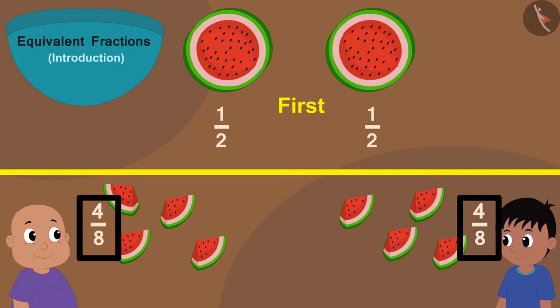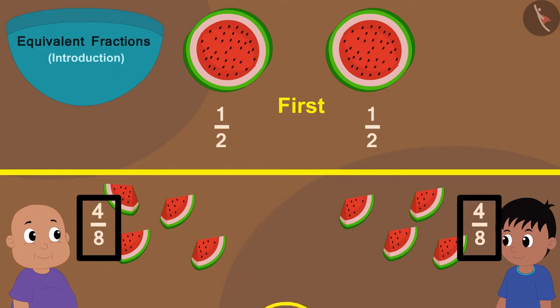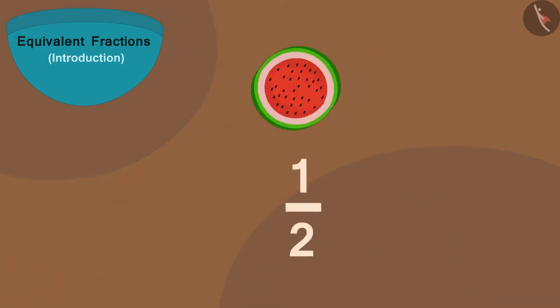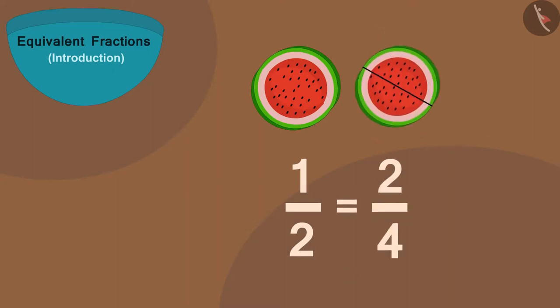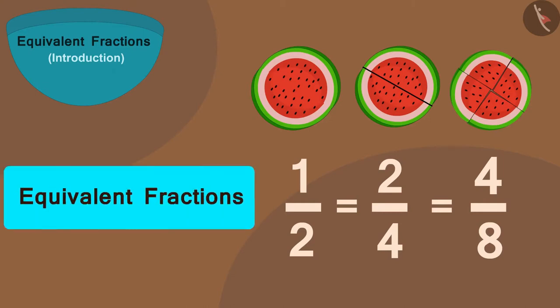If you look closely, you will find that they are still getting half of the watermelon. So, we can write the fraction one by two is equal to the fraction two by four is equal to the fraction four by eight. All of these are equivalent fractions.